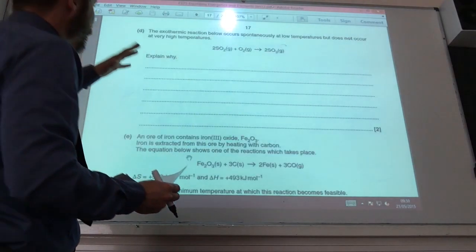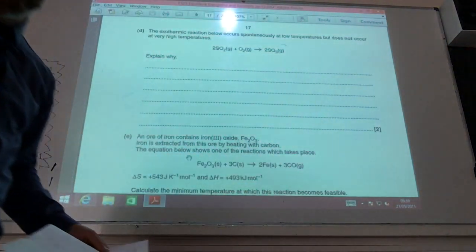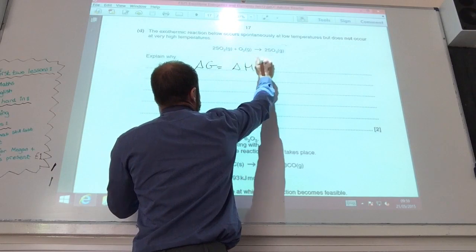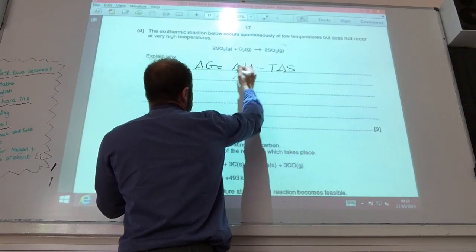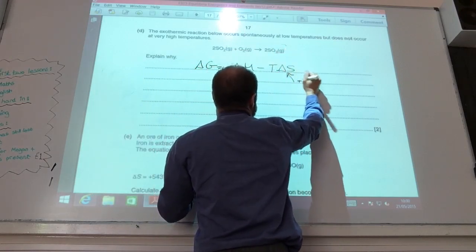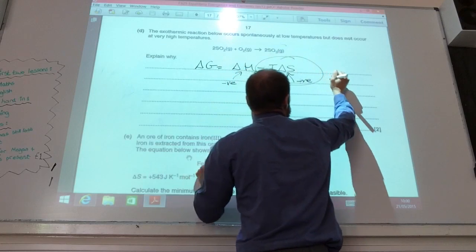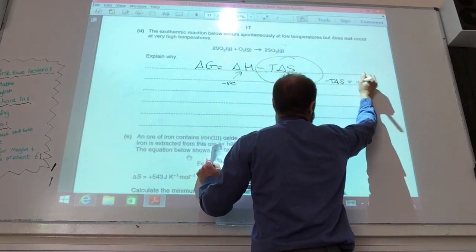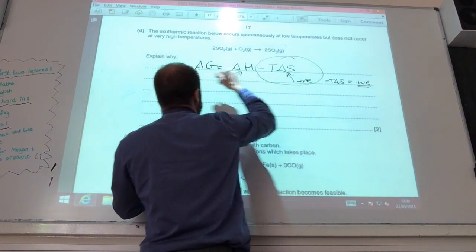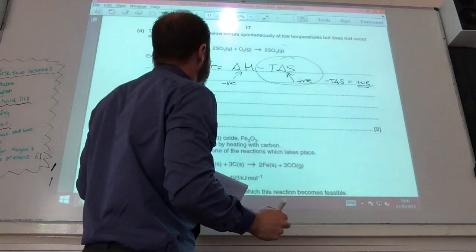This exothermic reaction occurs spontaneously at low temperatures but does not occur at very high temperatures. Explain why. Okay, so I find it quite useful to always use this equation to explain it. It's exothermic, so delta H is going to be negative. But if you have a look, the disorder is decreasing, so delta S is also going to be negative. Which means minus T delta S is going to be a positive expression, because it will be negative times a negative. Therefore, delta G must be less than or equal to zero for it to be spontaneous.